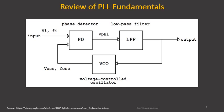That error voltage, after passing through the low pass filter, gets fed to the voltage controlled oscillator. Depending upon the magnitude of this voltage, the VCO adjusts its frequency F_oscillator so that the error in phase gets minimized. At one condition it will be equal to zero, and when that condition is satisfied, the loop will get locked.